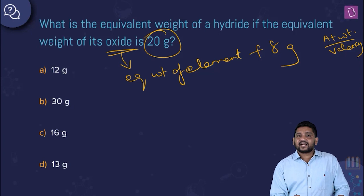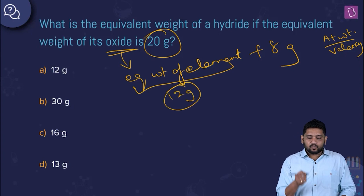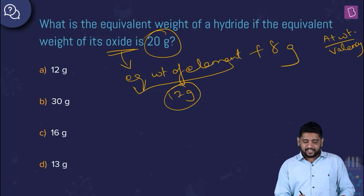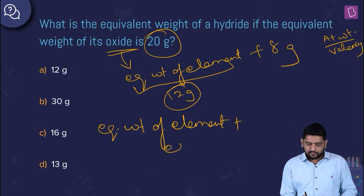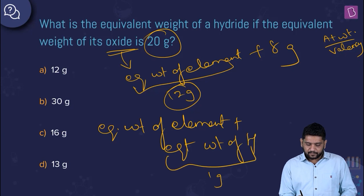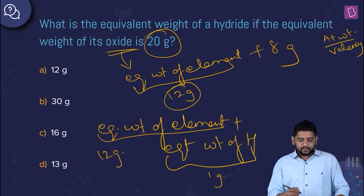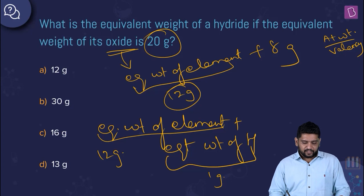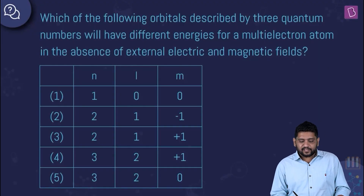Out of 20, 8 grams is that of oxygen, so the equivalent weight of the element is 12 grams. By the same logic, the equivalent weight of a hydride equals the equivalent weight of the element plus the equivalent weight of hydrogen. Since the equivalent weight of hydrogen is 1 gram, we get 12 + 1 = 13 grams as the equivalent weight of the hydride — option D.